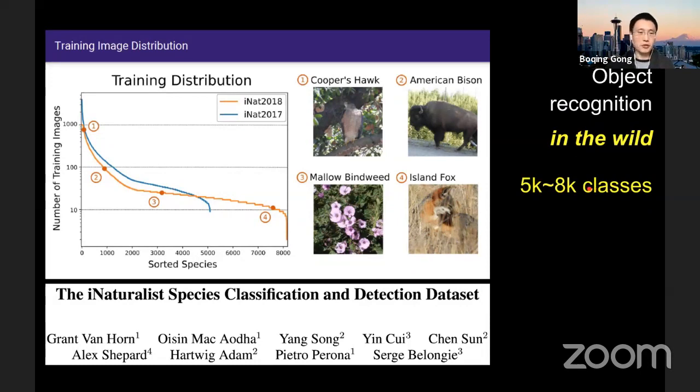And very interestingly, because the data is from the world, from the real world, you have a very long tailed distribution over the classes. Some of the classes actually have only five or 10 training images, but the others, you really got up to more than 1000 training images. So how can we still apply a previously successful machine learning techniques in the standard manually compiled data sets to this is a little bit more wild data set. That's become the problem.